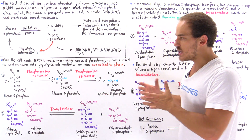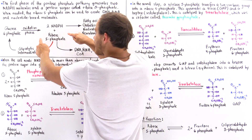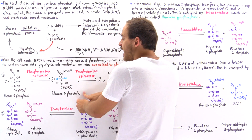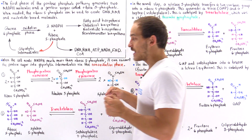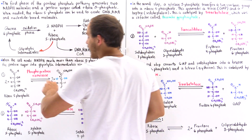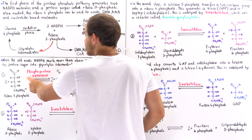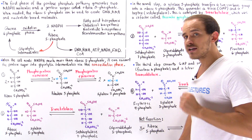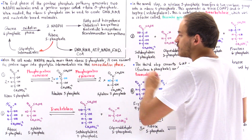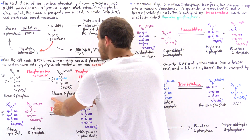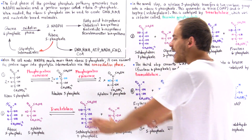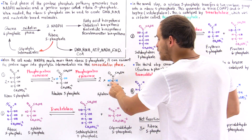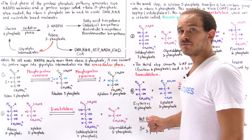In process 1, there are two steps. In the first step, we take the ribose 5-phosphate molecule and transform it into its isomer ribulose 5-phosphate. This is the same reaction from the previous lecture but in reverse, catalyzed by phosphopentose isomerase. Then ribulose 5-phosphate undergoes a second reaction catalyzed by phosphopentose epimerase, transforming it into xylulose 5-phosphate. The only difference between these two molecules is the stereochemistry of the third carbon.